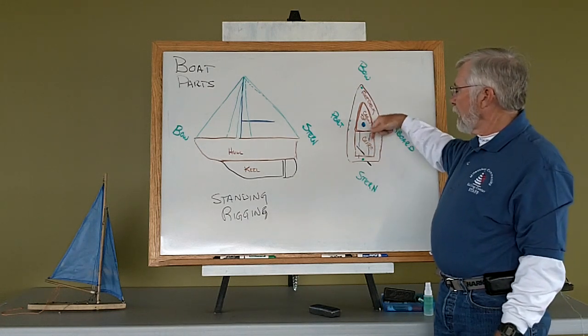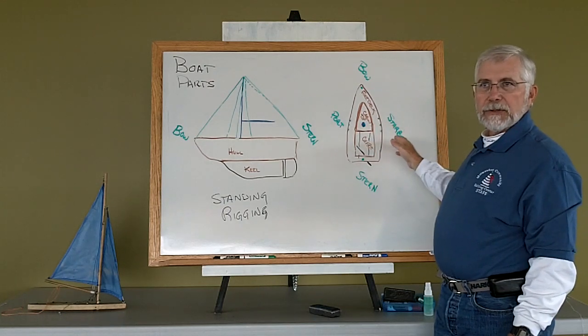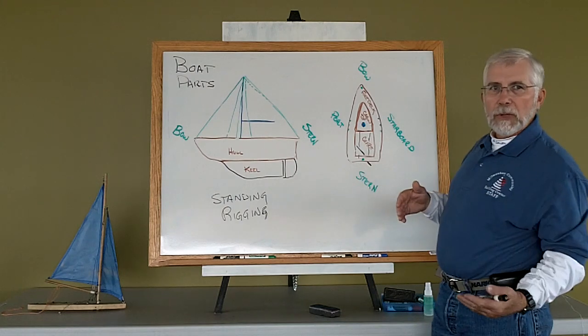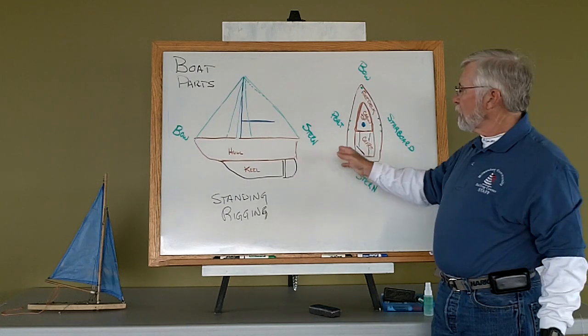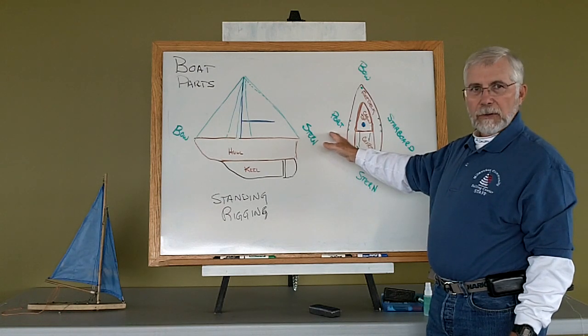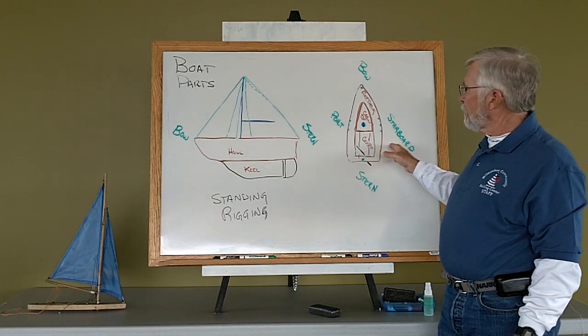When I turn around and look to the back of the boat, port and starboard don't change because it's always viewed and communicated in relationship to looking forward. So the port side of the boat is always going to be the same side of the boat. It's the left side when you're looking forward. Starboard is the right side when you're looking forward.